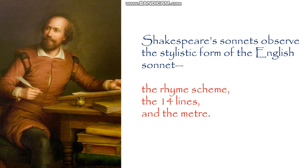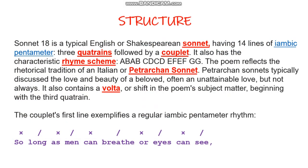Shakespeare's sonnets observe the stylistic form of the English sonnet: the rhyme scheme, the fourteen lines, and the meter. After the three quatrains — twelve lines — we have the thirteenth and fourteenth lines, called the rhyming couplet, which contains the solution to the case presented in the sonnet. Sonnet 18 is a typical English or Shakespearean sonnet having fourteen lines of iambic pentameter.